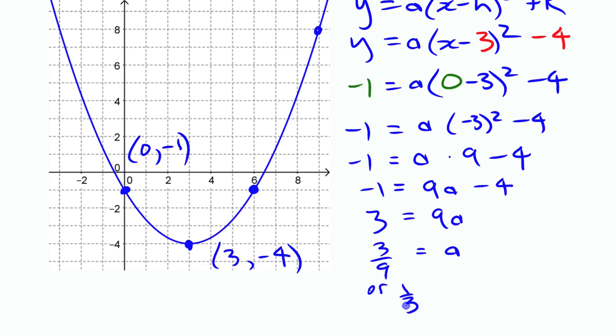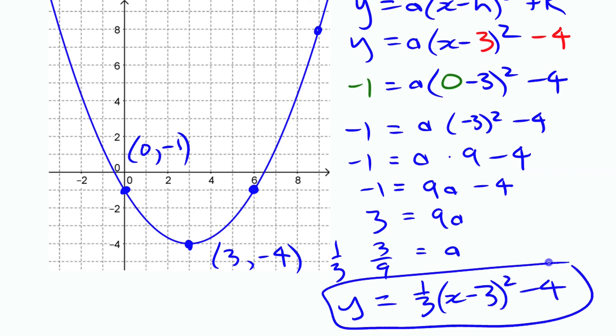When you solve for a there you get 3/9 or 1/3. Either way is fine. But then you can write the equation of your function to be y equals 1/3(x - 3)² - 4. That's that vertex form equation.